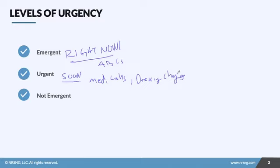If a patient is in pain and needs pain medication, that's urgent — we need to deal with it soon. Non-emergent situations can be done last, after we've dealt with emergent and urgent situations. These include things like daily bedsheet changes, baths, and linens — things that don't need to be done right now or soon, but need to be done. If we plug this in with Maslow's hierarchy of needs, we can start caring for our patients at the appropriate level of priority.